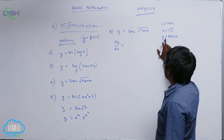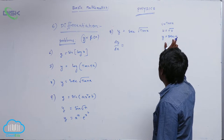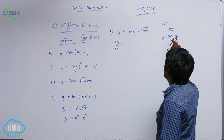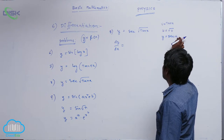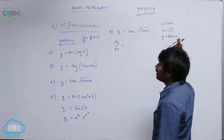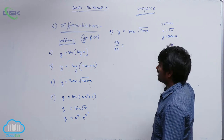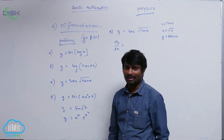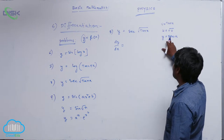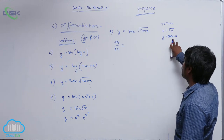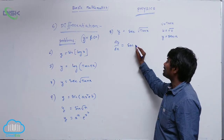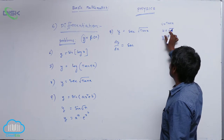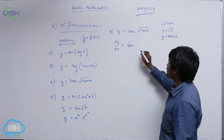I am going to differentiate with respect to u. dy by du is equal to the differentiation of secant u, which is secant u tan u — because differentiation of secant x with respect to x is secant x tan x. So differentiation of secant u with respect to u is secant u into tan u. But u value is root v, and v is tan x.